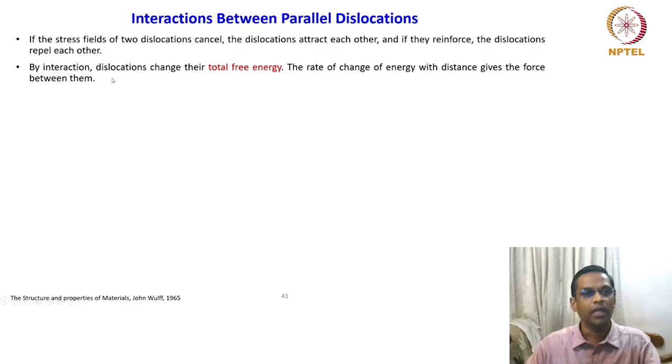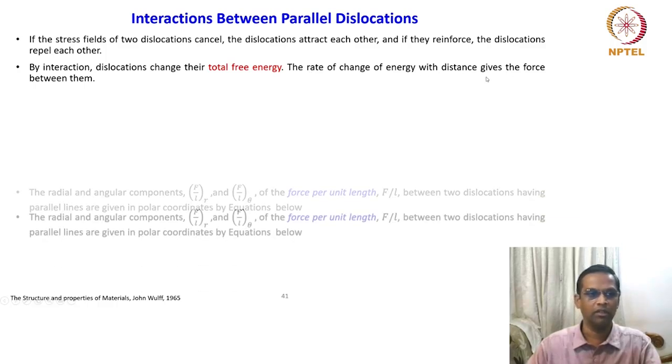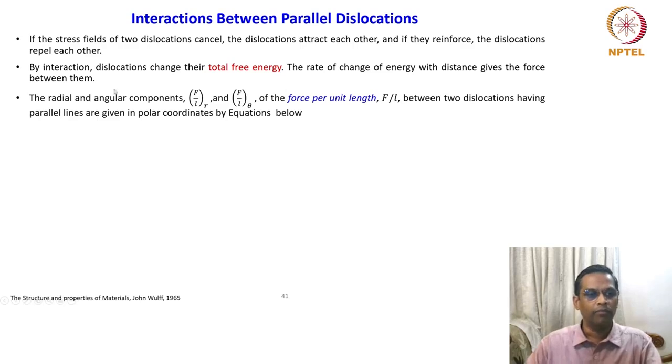By interaction, dislocations change their total free energy and we are looking at the rate of change of energy with distance, which gives the force between them. Please understand that we are looking at the rate of change of energy with the distance of a dislocation. If you look at the force in polar coordinates, the radial and angular components, that is F/L_r and F/L_θ of the force per unit length between two dislocations having parallel lines are given in polar coordinates by the equation below.